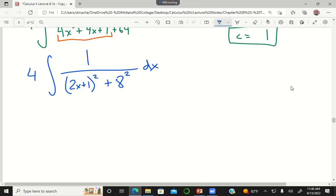I have an integrand that looks like 1 over a variable squared plus a constant squared. That is an arc tangent type integral. This is gonna be 4 times 1 over 8 arc tan.